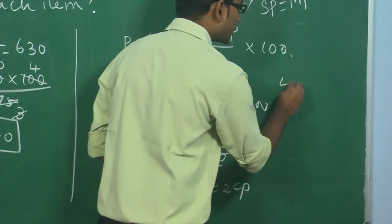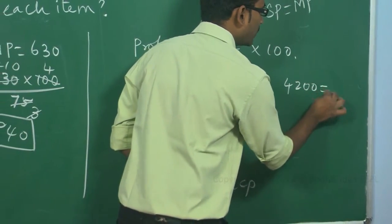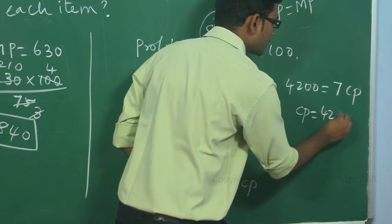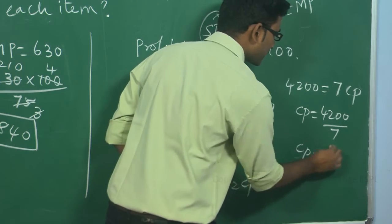this will become 4200 is equal to 7CP. CP is equal to 4200 by 7. So cost price is 600.